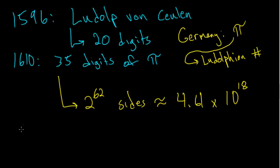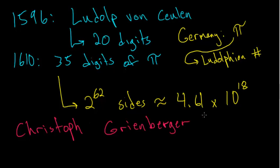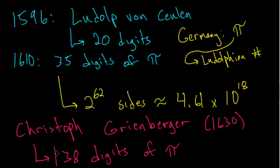To finish out the polygon approximation era, we have the Austrian astronomer Christoph Greinberger, who in the year 1630 was able to find 38 digits of pi. These 38 digits remain today as the world record for the most amount of digits found using polygonal approximations.